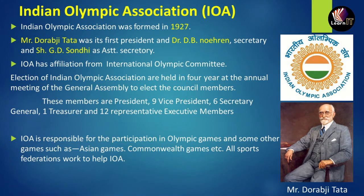It has got affiliation from the International Olympic Committee. The elections of the Indian Olympic Association are held every four years at the annual meeting of the General Assembly to elect council members. Members include one president, nine vice presidents, six secretary generals, one treasurer, and 12 representatives from executive boards.